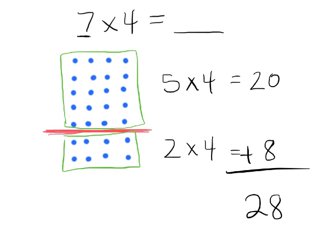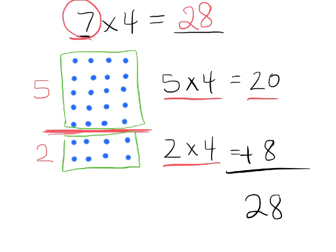That tells us that the answer for 7 times 4 is 28. That's a really cool trick, a super powerful strategy using the distributive property. To take the 7 and you break it up into 5 rows and 2 rows. Five rows of 4 is 20, two rows of 4 is 8, and then we add them together.